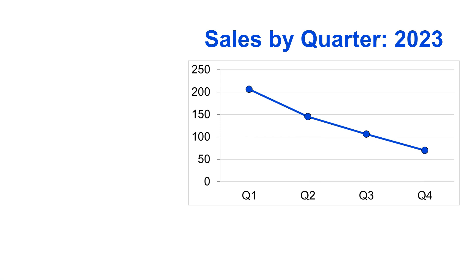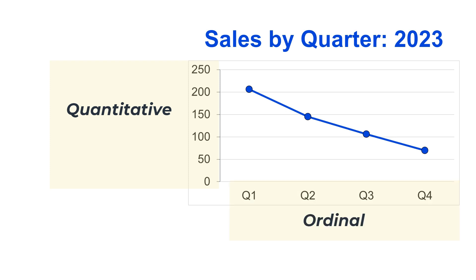In a line chart, one axis is always quantitative, as shown here with the number of items sold. And one axis is always ordinal, and it usually shows the data over time. So here we have quarter one, two, three, and four of the year. We could also show years or months or days of the week. All these data types are ordinal because they have a natural order.